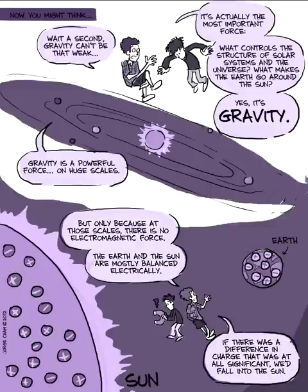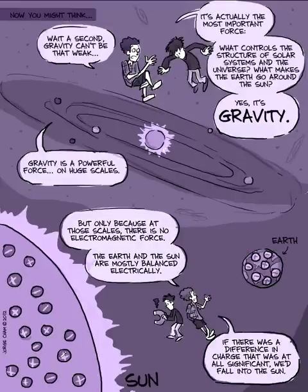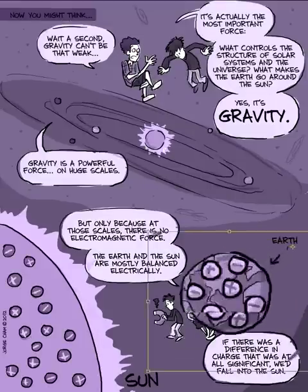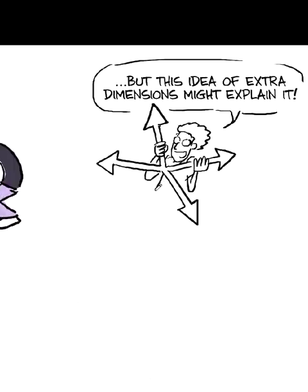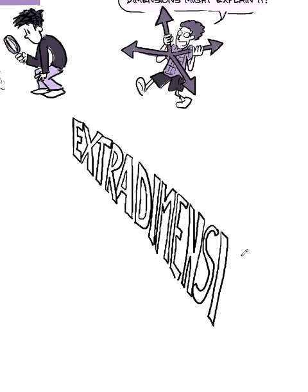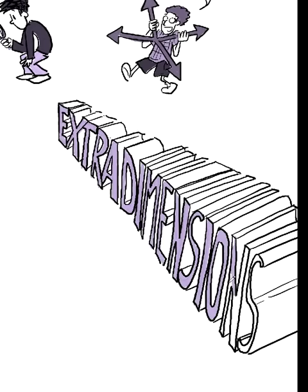If there's positive charge on the Earth and negative charge on the Sun that was at all significant, we would just get sloped up into the Sun. So nobody knows why gravity is so weak. But this idea of extra dimensions might explain it. This idea that there might be more dimensions to space than just three dimensions.